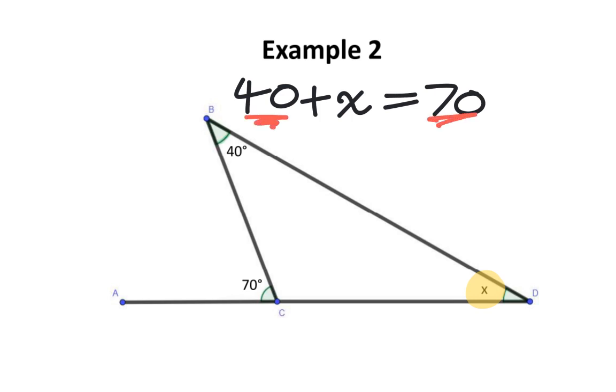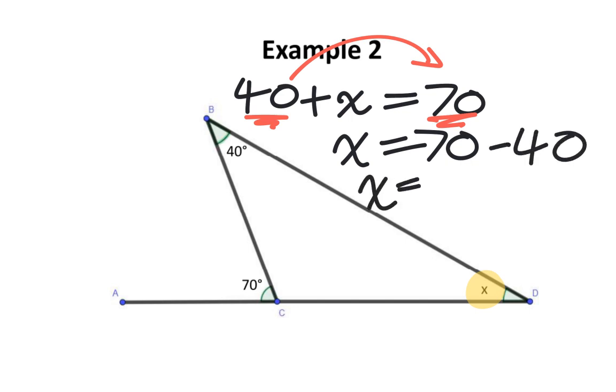40 and 70 would be like terms. I'm going to move the 40 to the other side of the equation. When I do that, that 40 is no longer positive. It is now negative. We can simplify this equation. 70 subtract 40 is going to give you 30. Therefore, the unknown angle is 30 degrees.